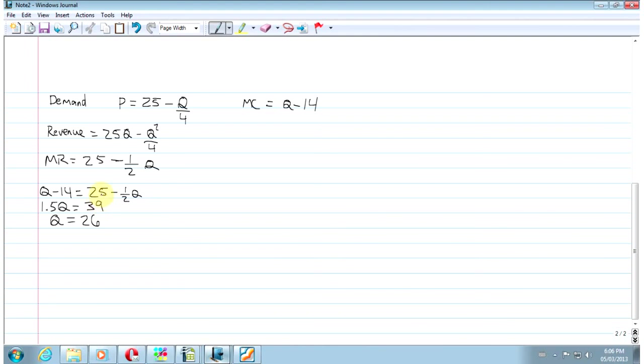Now we just want to check that that quantity is associated with a positive profit. Or in this case, since we don't know fixed cost, we want to make sure that we give our friend the advice that if his fixed cost is above a certain amount, then he should not enter the market. So let's set up a profit function for our friend here.